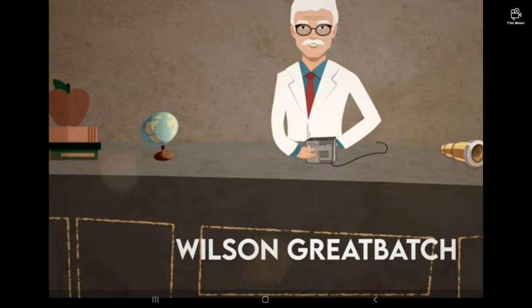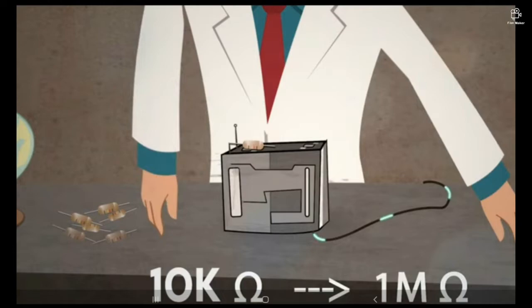In order to understand how a pacemaker works, we have to understand who invented it. His name is Wilson Greatbatch and he invented it. Basically, how he invented it is he had taken a 10k resistor and forgot to put on a 1 million ohm resistor which would resist the current.